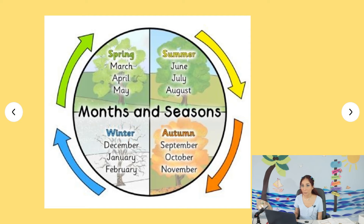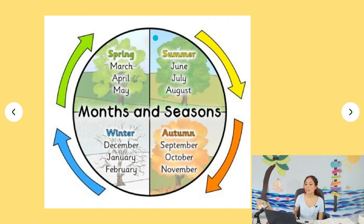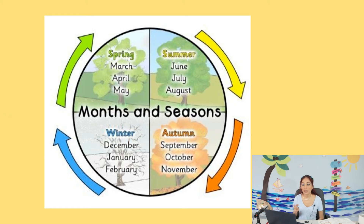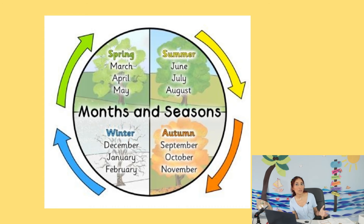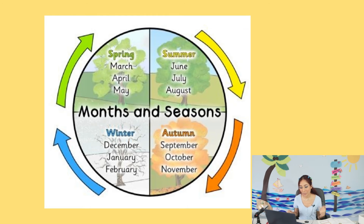Then we have summer. Because spring ends in May, summer is in June, July, and August. Some people think spring and summer are similar, but summer is super hot. The plants get greener, all the animals need to stay safe, and you can go to the beach. Even here in Mexico it's hotter than you think.